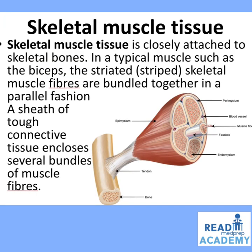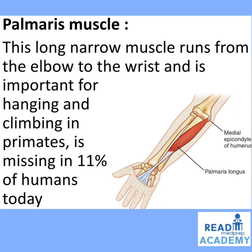Skeletal muscle tissue is closely attached to bones. In a typical muscle such as the biceps, striated skeletal muscle fibers are bundled together in a parallel fashion. A sheath of tough connective tissue encloses several bundles. The muscle has an outer covering called the epimysium, inside which is the perimysium, and the endomysium within the bundles, with blood vessels and fascicles. The palmaris muscle runs from the elbow to the wrist and is missing in 11% of humans today.